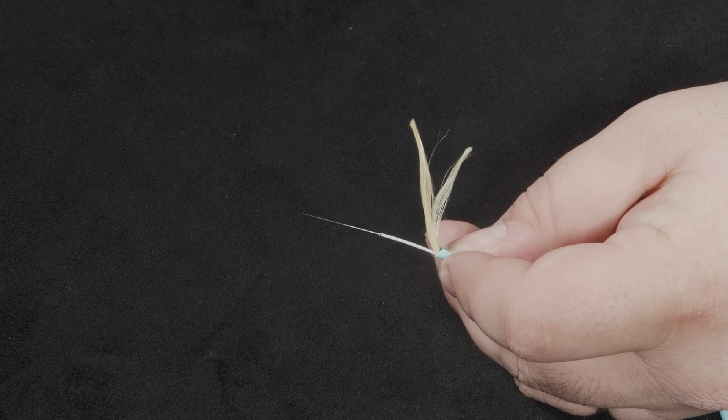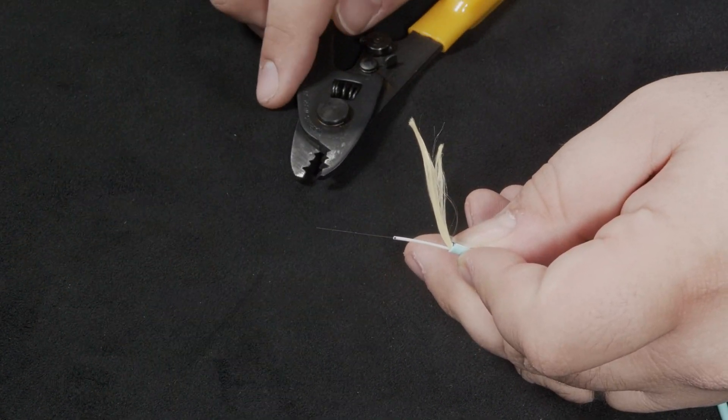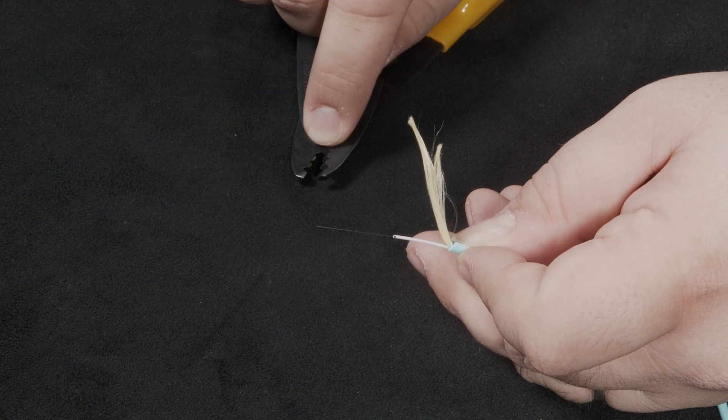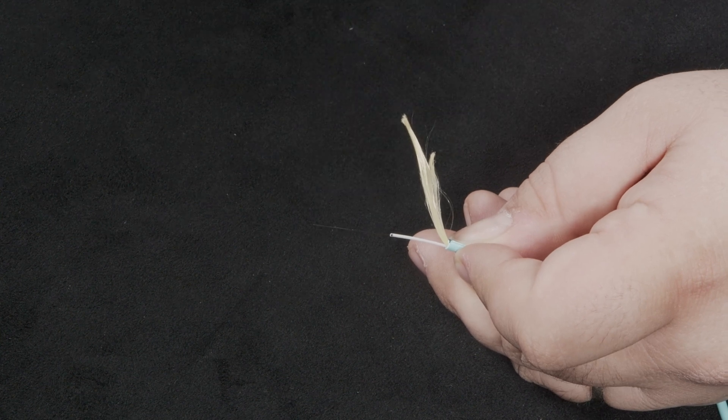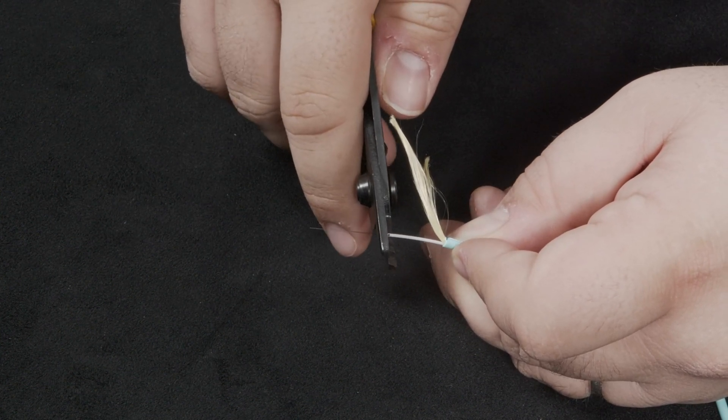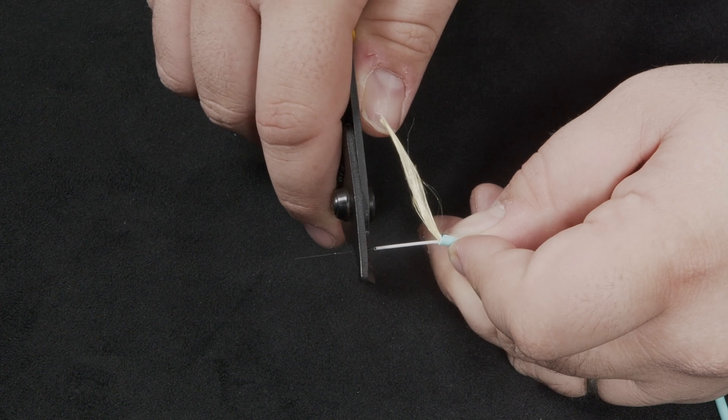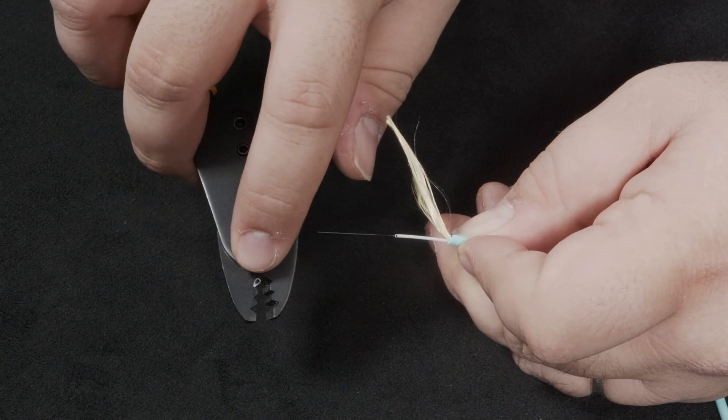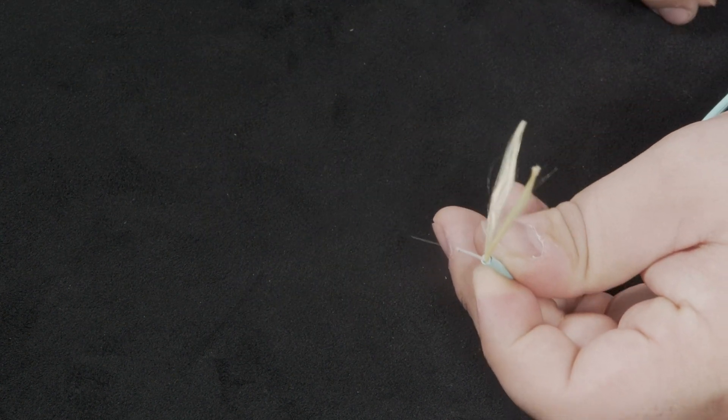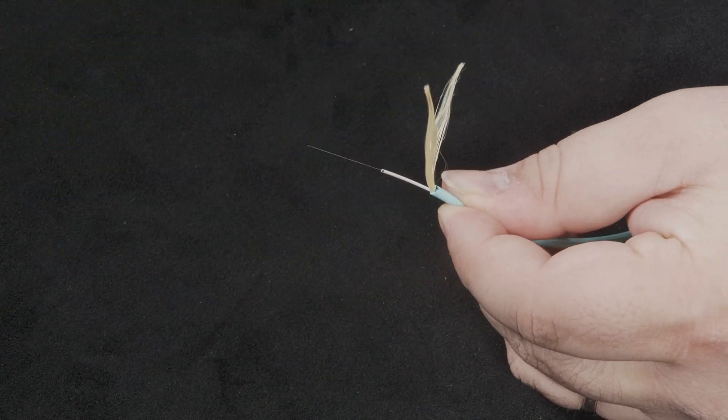All that remains is the inner cladding. Now using the third opening on the fiber strippers remove any of the remaining cladding. Wipe off any remaining cladding to prepare for cleaving.